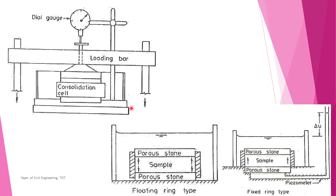There are two types of consolidation cell. Here is the schematic diagram showing the consolidation cell, the loading bar used to apply load, and the dial gauge for noting displacement. The two types are the floating ring type and the fixed ring type.